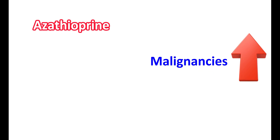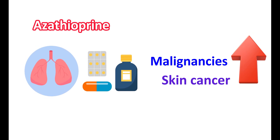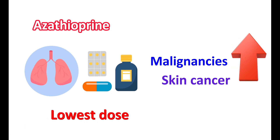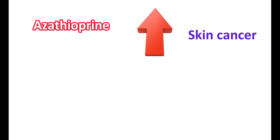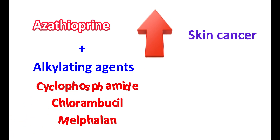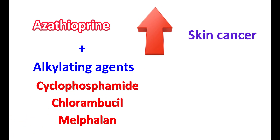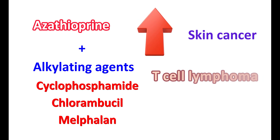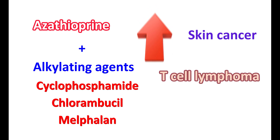Now let us look at the precautions. Azathioprine is an immunosuppressant, therefore its use can increase the risk of malignancies. Particularly, it can increase the risk of skin cancer. If used for prevention of organ transplant rejection, lymphoma may develop after transplantation, so the lowest effective dose should be used. When used for rheumatoid arthritis, skin cancer risk may increase, particularly when combined with alkylating agents like cyclophosphamide, chlorambucil, or melphalan. Azathioprine can also increase the risk of T-cell lymphoma, especially when combined with TNF (tumor necrosis factor) blockers.